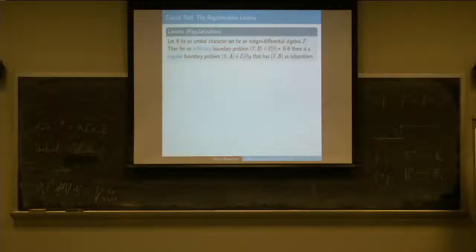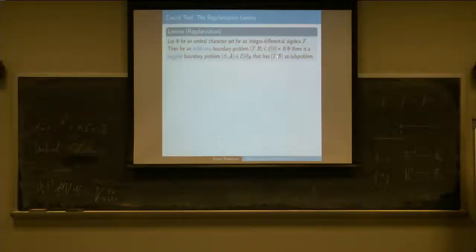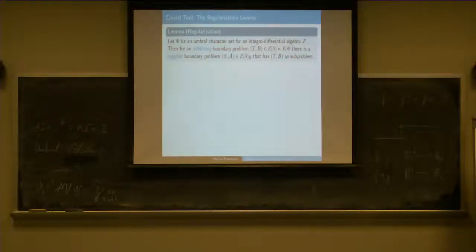The point where the umbral character sets are really used is the fact that if you have a singular boundary problem—TB is not assumed to be regular—if you have an arbitrary boundary problem that is singular in the sense that there doesn't exist a unique solution, then I can embed it into a regular problem. So SA is a bigger boundary problem of higher order with more boundary conditions, but it will be a regular problem that has this as a sub-problem.